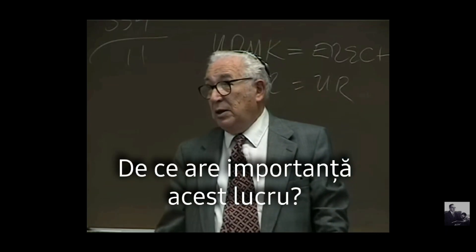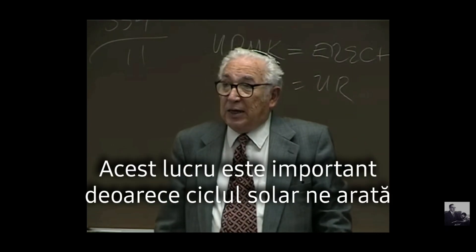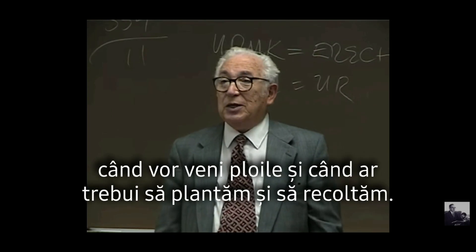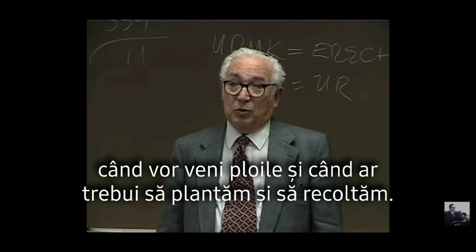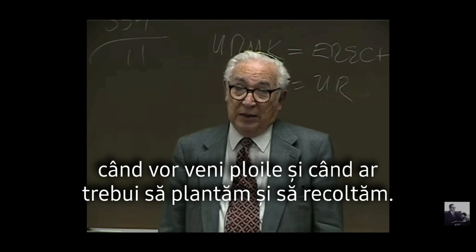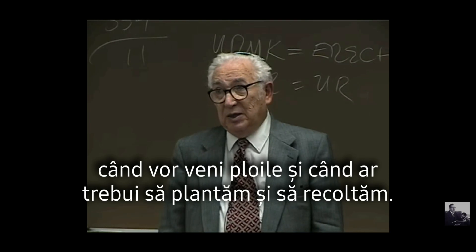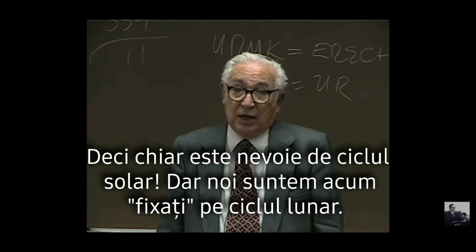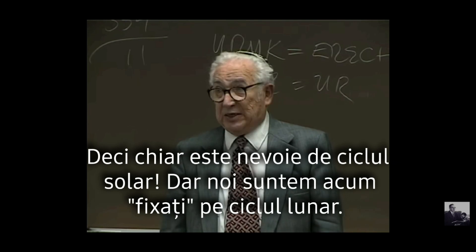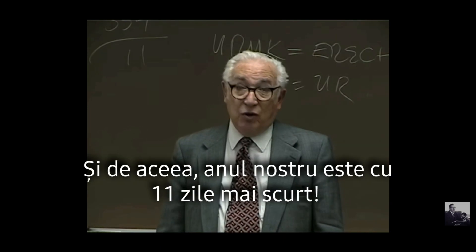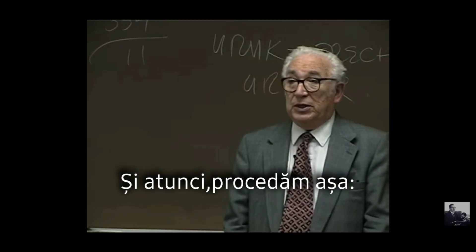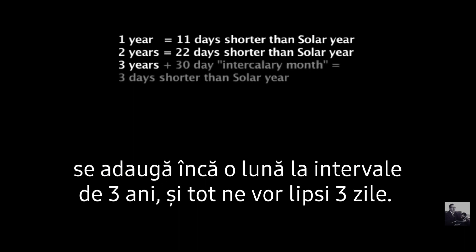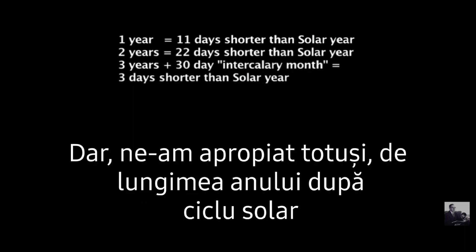Why is that important? Because the solar cycle tells you when the rains will come and when you should plant and when you should harvest. So you really need a solar cycle. But you're already fixed on the lunar month, and therefore your year is going to be 11 days short. So what you do is add a month, and you wind up three days short — back to close to the solar cycle.